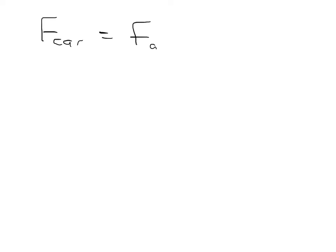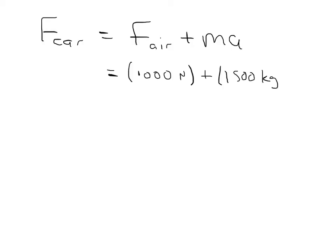Now that we know the acceleration, we can calculate the force produced by the car's engine. F-car equals F-air plus mass times acceleration. The force due to air resistance is a constant 1000 newtons, plus 1500 kilograms times 4 meters per second squared. When you work that out, that is 7000 newtons.